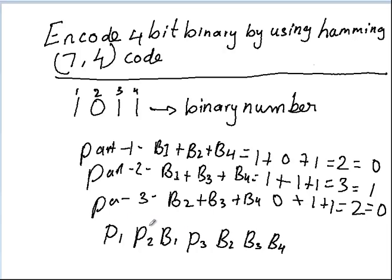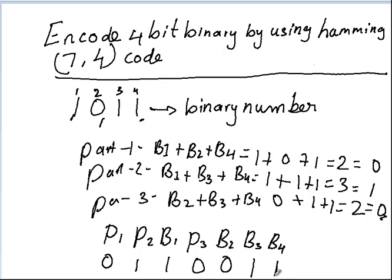We already know the binary bits, so now we can write out the full result. Parity bit 1 is 0, parity bit 2 is 1, binary bit 1 is 1, parity bit 3 is 0, binary bit 2 is 0, binary bit 3 is 1, and binary bit 4 is 1. This is how the four binary bits have been encoded using Hamming (7,4) code, converting four binary bits into seven.